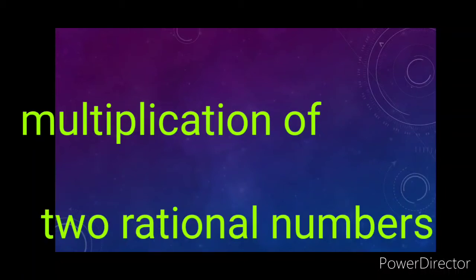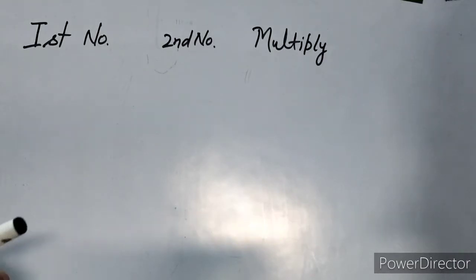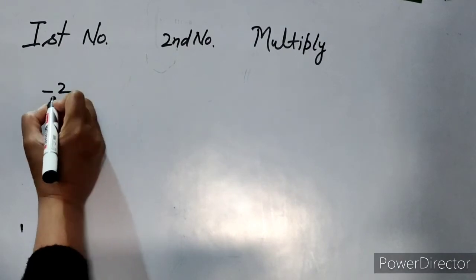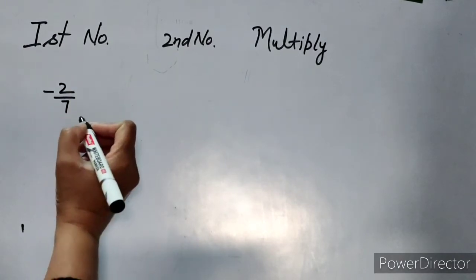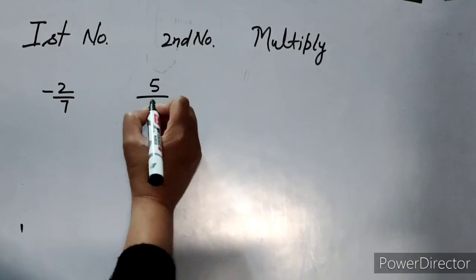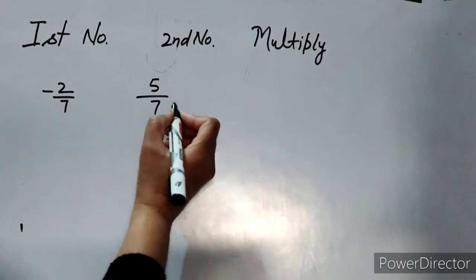Hello friends, welcome to my YouTube channel. In this video we learn about multiplication of two rational numbers. The first rational number is minus 2 over 7 and the second rational number is 5 over 7.